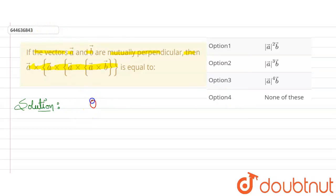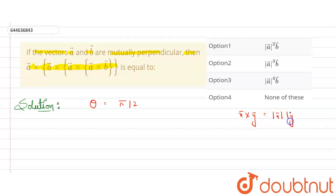Since vectors a and b are mutually perpendicular, the angle theta between them is 90 degrees. We have cross products between every vector. For the cross product of vectors x and y, it equals magnitude of x times magnitude of y times sine of theta. Since theta is 90 degrees, sine of 90 equals 1.